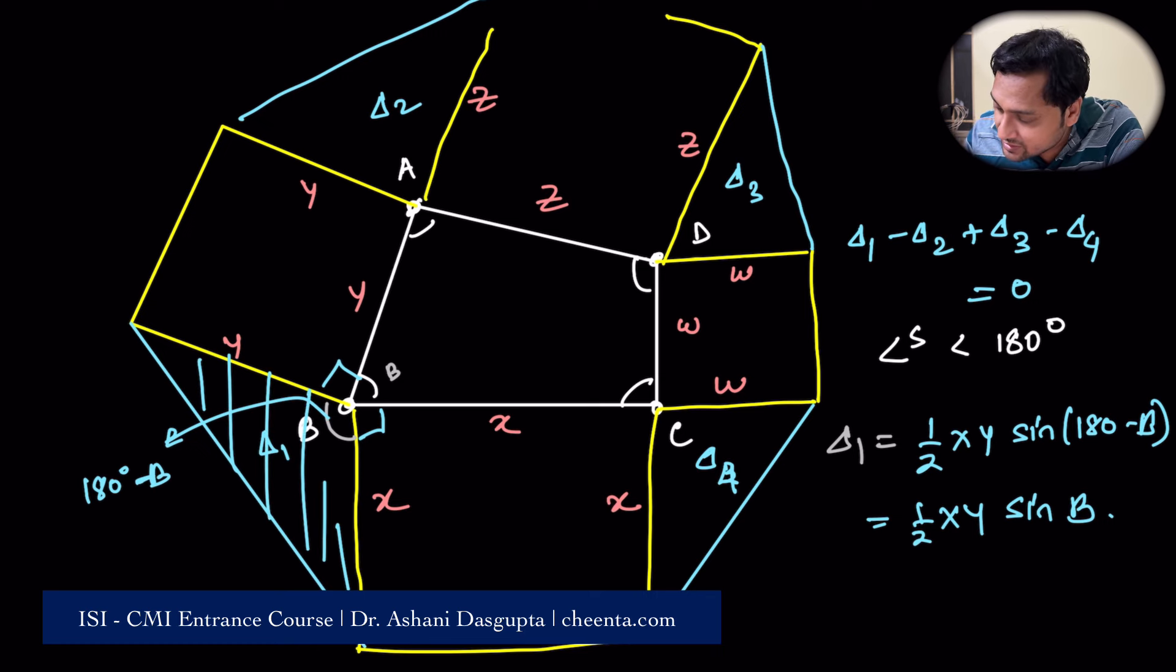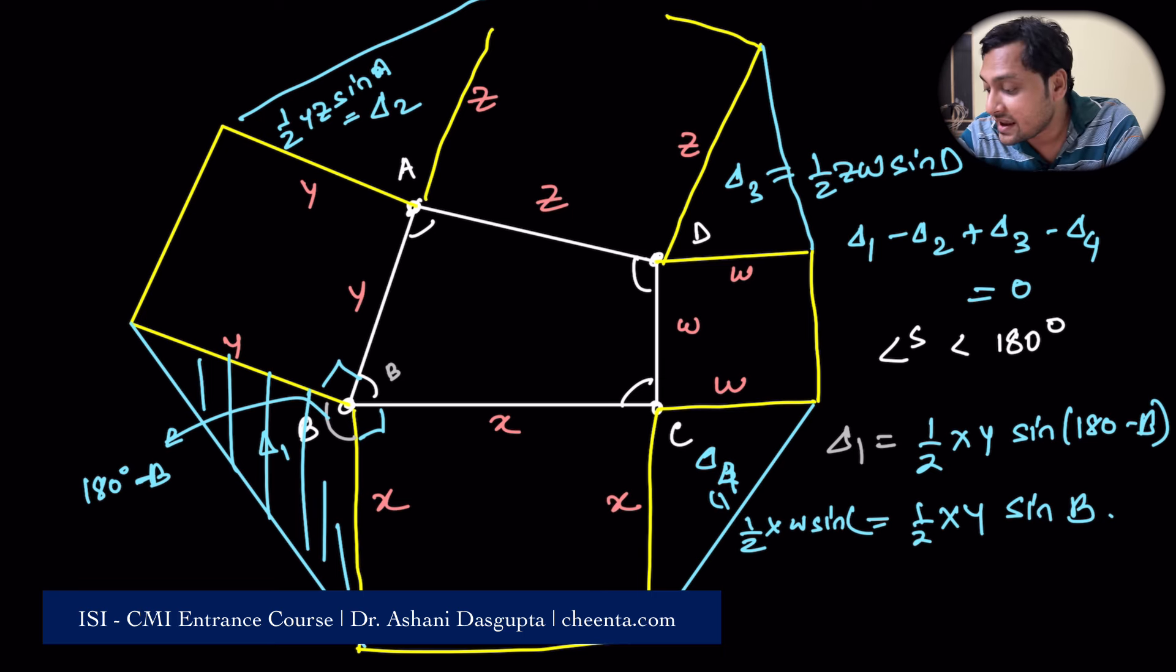That's great. Similarly, delta 2 is half yz sin a, area of delta 3 is half zw sin d, and area of delta 4 is half xw sin c. Okay, so that's the four triangles area.